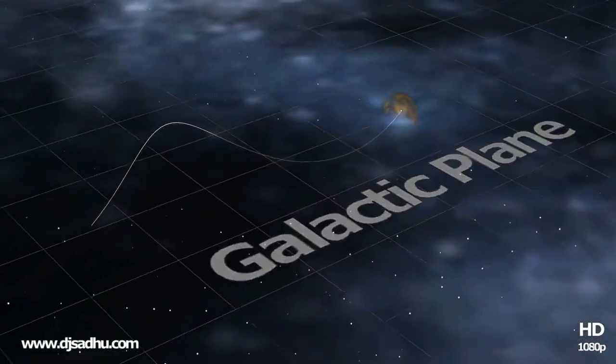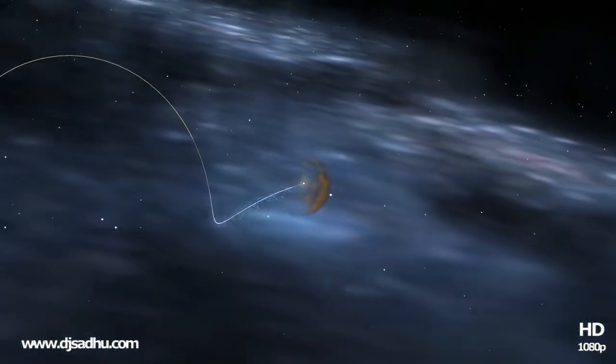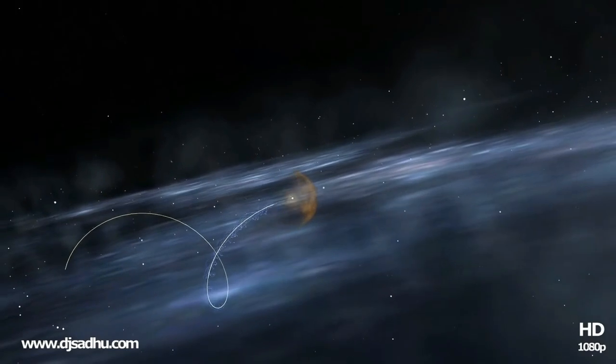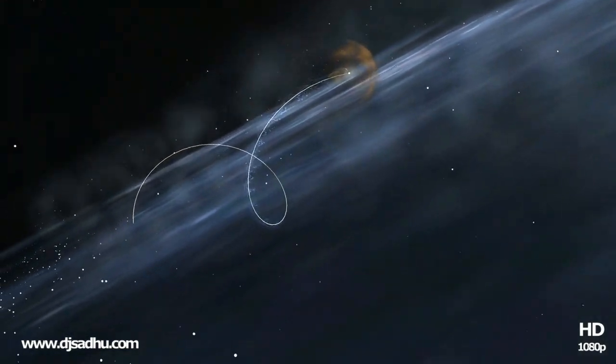The sun swims in its orbit with all the planets, in an average speed of 220 km per second, this is equivalent to 800,000 km per hour.